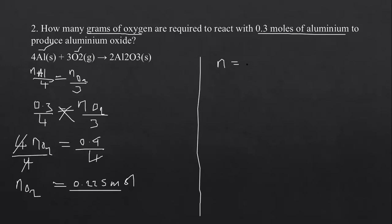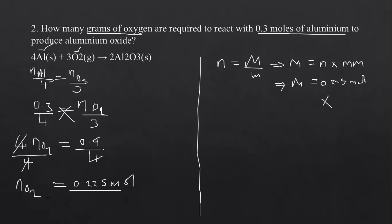Using the formula: number of moles equals mass over molar mass, so mass equals number of moles times molar mass. Mass equals 0.225 moles times the molar mass of O2. Oxygen has mass number 16, so 16 times 2 = 32 grams per mole. Multiplying 0.225 by 32 g/mol — mole units cancel — gives 7.2 grams. That is how mole-to-mass calculations are done.